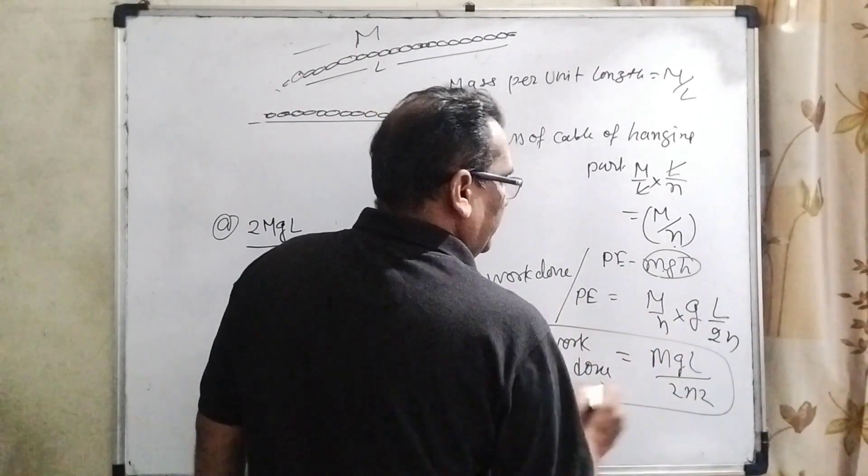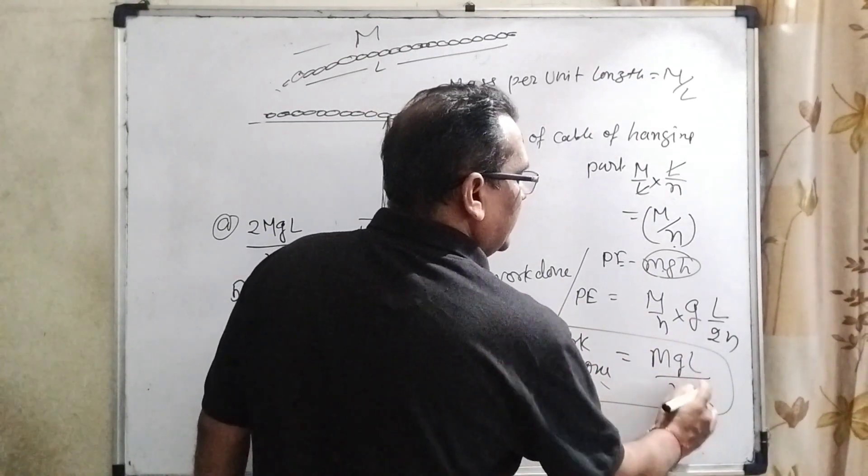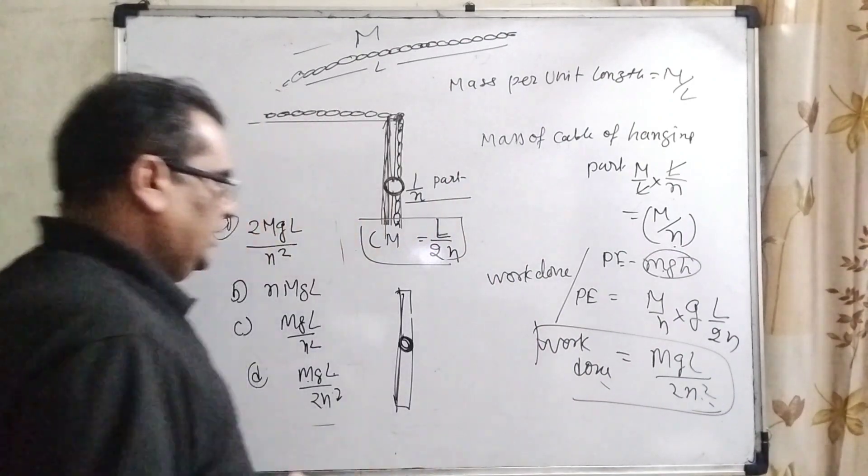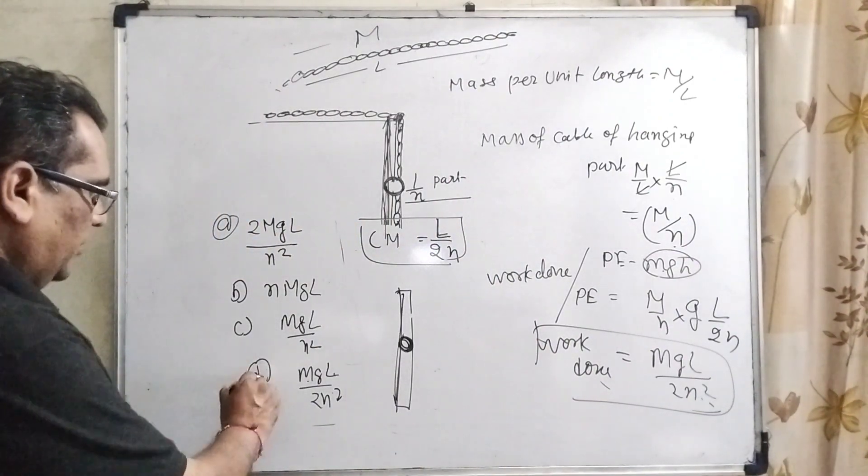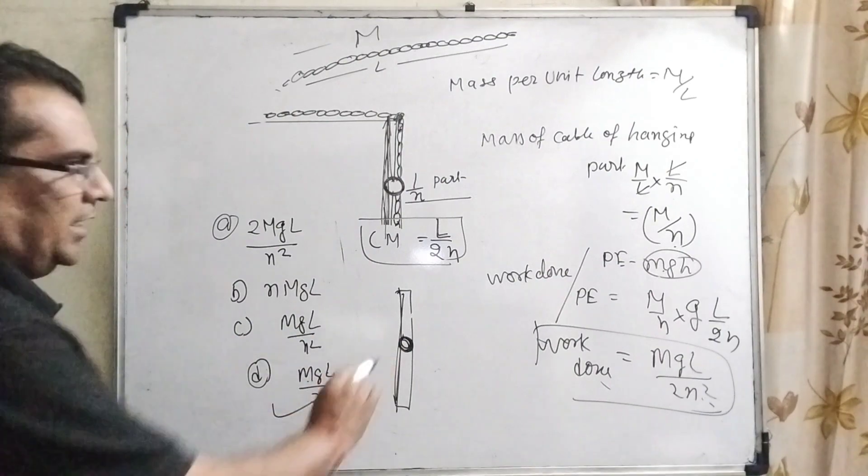So let's see which option is 2n square. Here option D, MgL by 2n square, is correct.